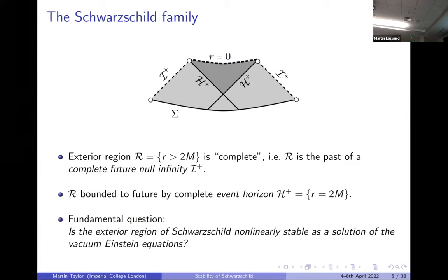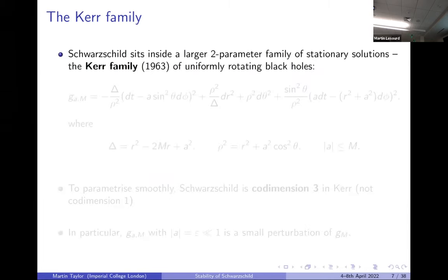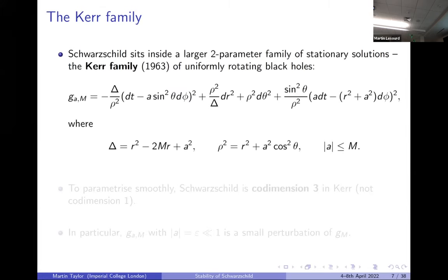The most basic question we can ask about this family is: is the black hole exterior region non-linearly asymptotically stable as a solution of the vacuum Einstein equations? Of course, this theorem can only be true modulo Kerr — Schwarzschild sits inside the larger family of stationary solutions, the Kerr family of uniformly rotating black holes. This is a two-parameter family with mass m and angular momentum parameter a. Setting a equal to zero, Kerr reduces to Schwarzschild.